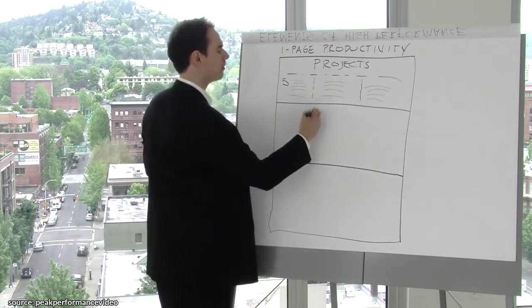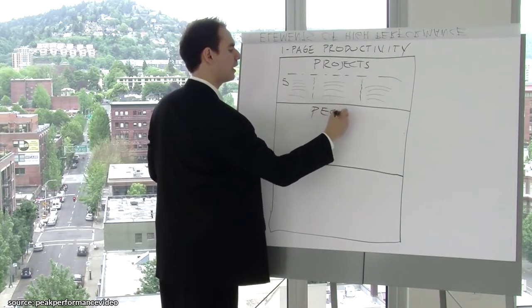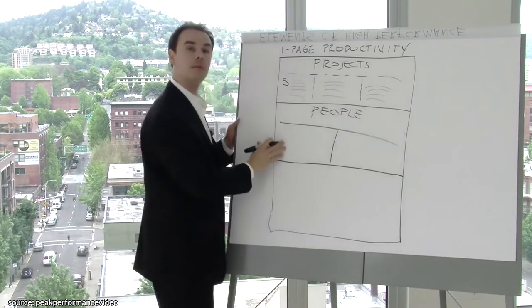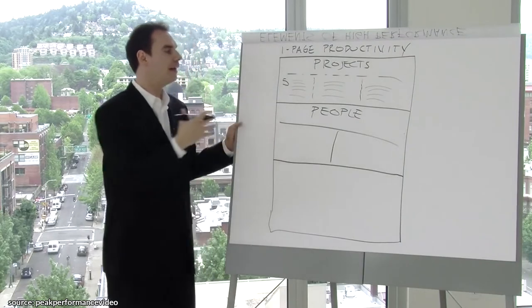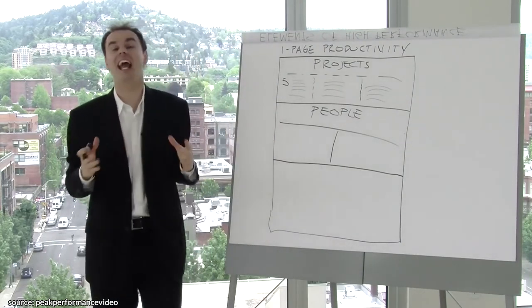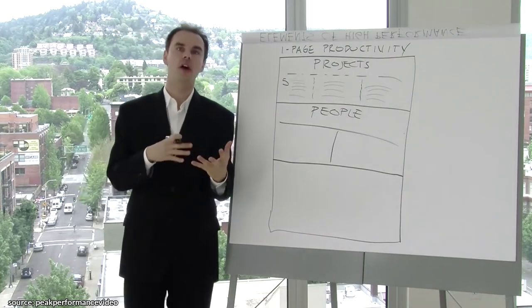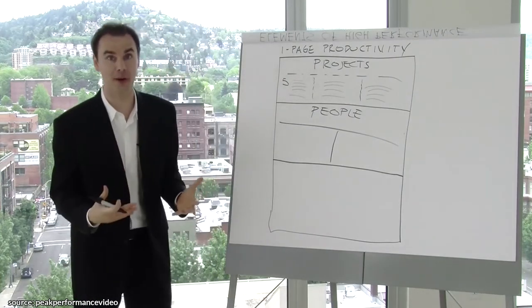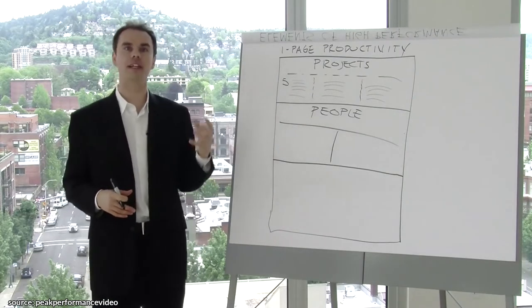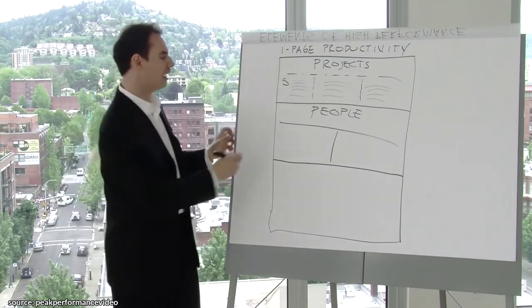Next is people category. In this people category, I want you to think of two things. The people category is really important for high performers because high performers really get ahead, not just because of who they know, but how they're engaging who they know, right? What they're asking for, what they're doing. So the people category that I want you to think of each morning on this one-page productivity is two categories.